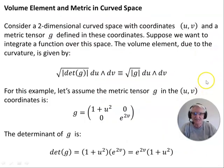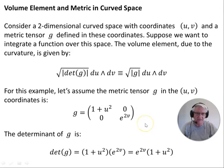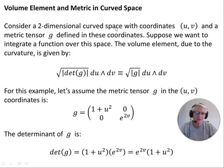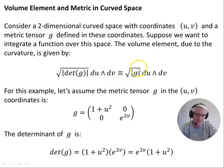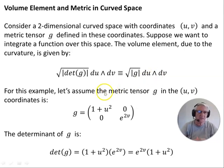Volume element and metric in curved space. I'm not going to use a four-dimensional curved space here, as the equations become large and distracting. So I'm just going to use a two-dimensional spatially curved space — not spacetime. Consider a two-dimensional curved space with coordinates UV and a metric tensor G defined in these coordinates. Suppose we want to integrate a function over this space. The volume element due to the curvature is given by the square root of the absolute value of the determinant of the metric, du wedge dv — that's in the UV coordinate system on N.